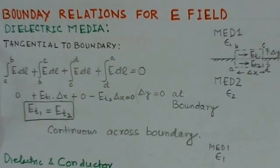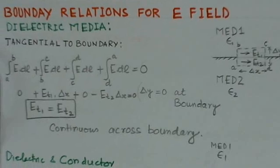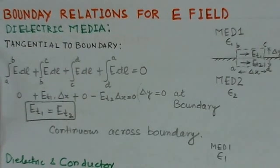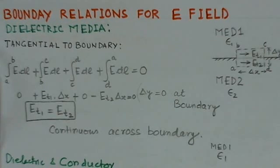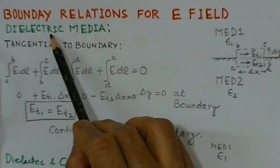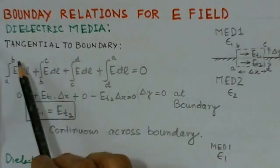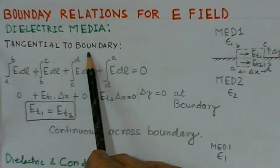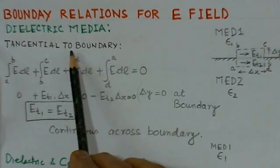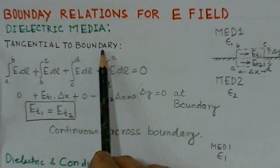These boundary conditions — how they are introduced and how they are used to solve practical problems — will now be discussed. We will start with the boundary conditions for the electric field. Here we consider two dielectric media, and first we consider the tangential component of the electric field at the boundary.